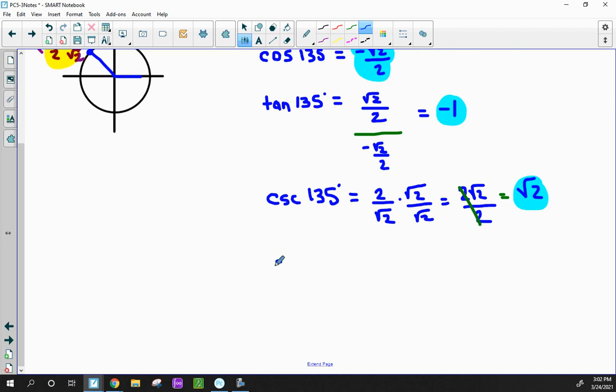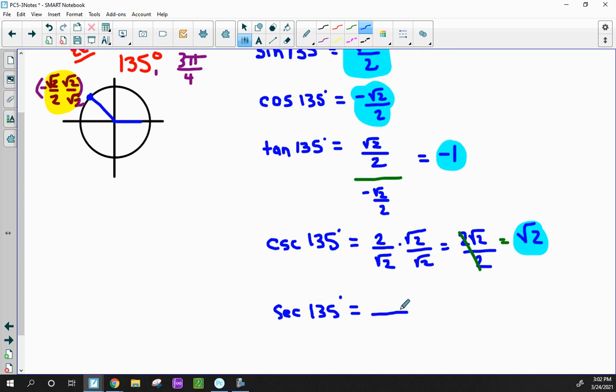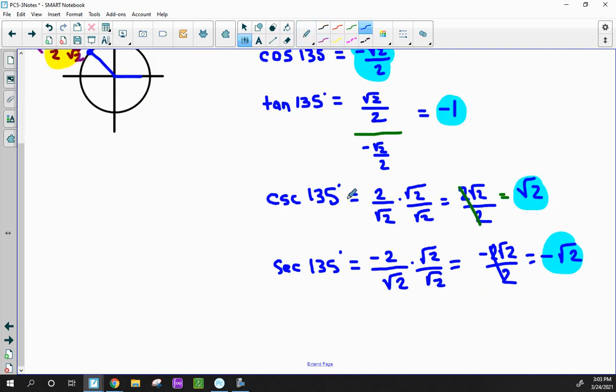Next we're going to do secant. Secant is the inverse of cosine. Remember to always put the negative on top. So it's going to be negative 2 divided by radical 2, and you're going to rationalize. You're going to get negative 2 radical 2 over just 2. The 2's cancel nicely, so now you're left with negative square root of 2. 5 down, 1 to go. We're going to do cotangent.